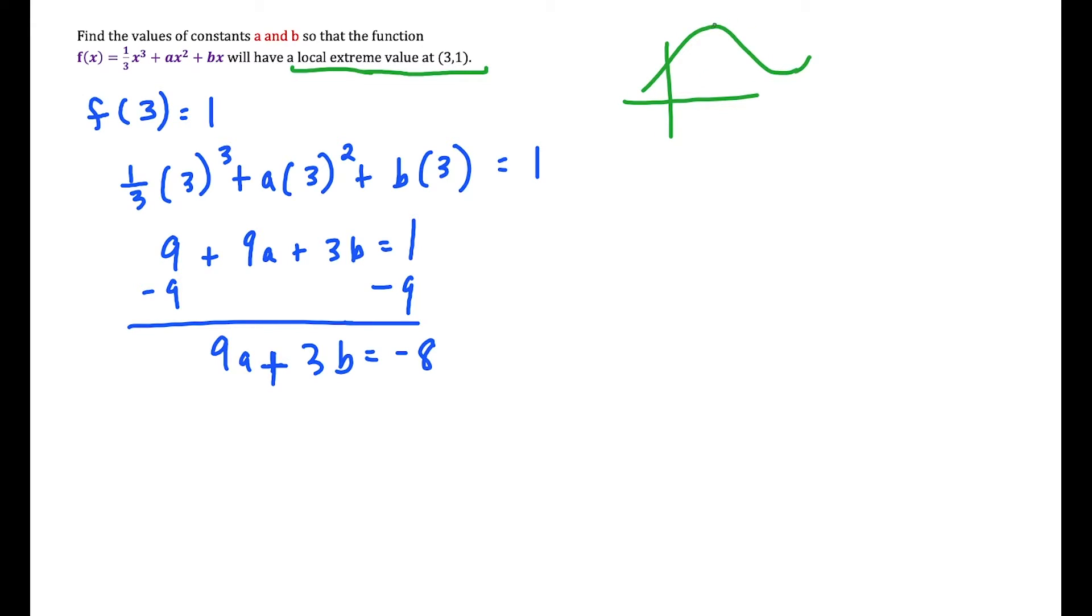...anytime I have a local extreme value, whether it's a max or a min, that tells us that we have critical points. So the idea is that (3,1) is a critical point of f(x).